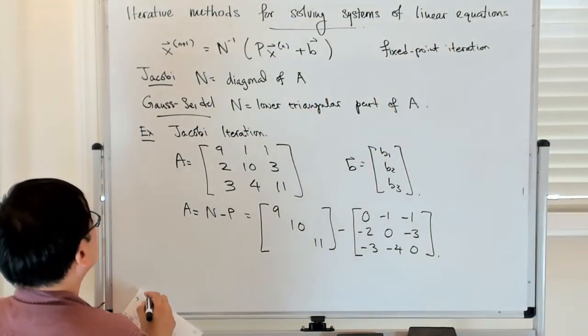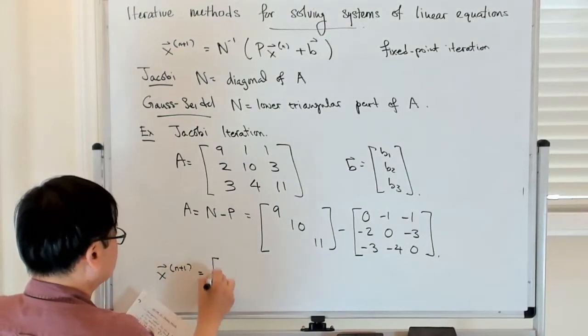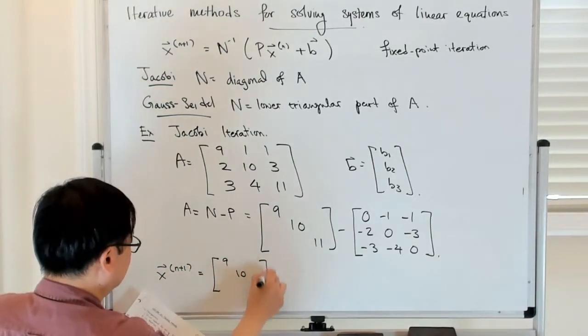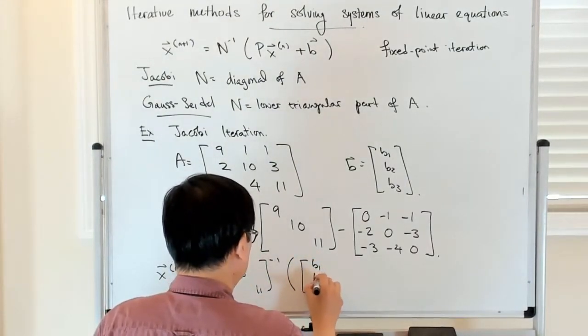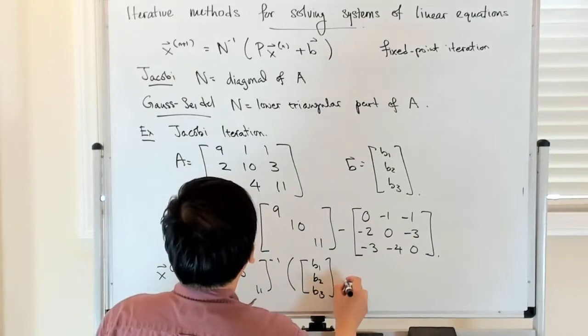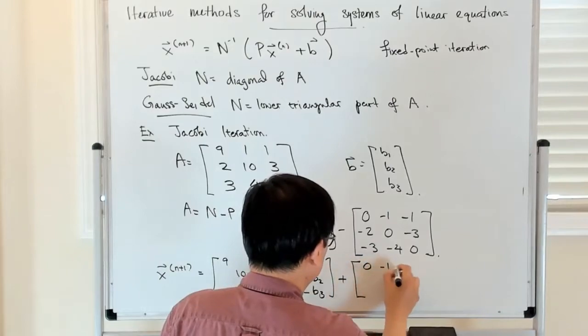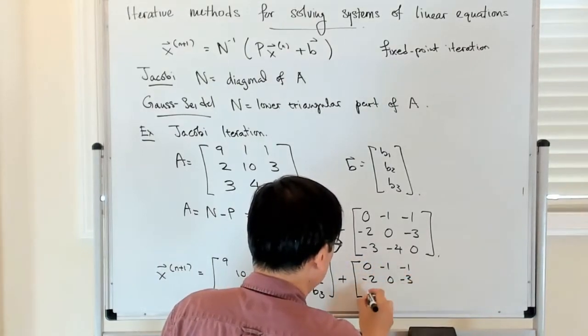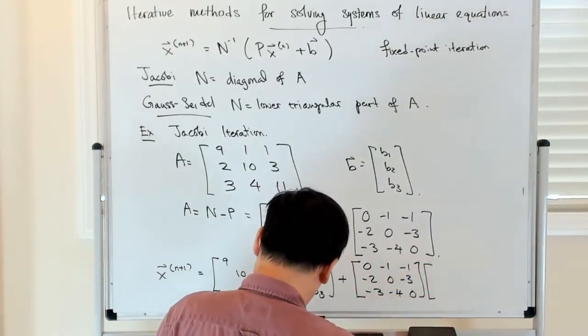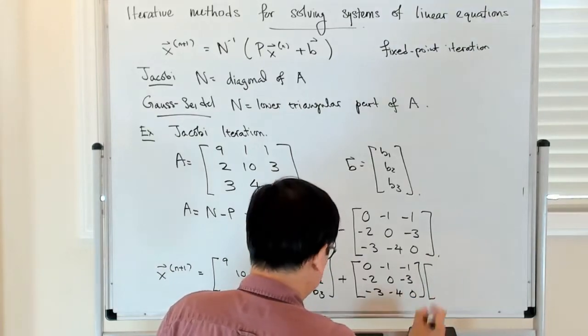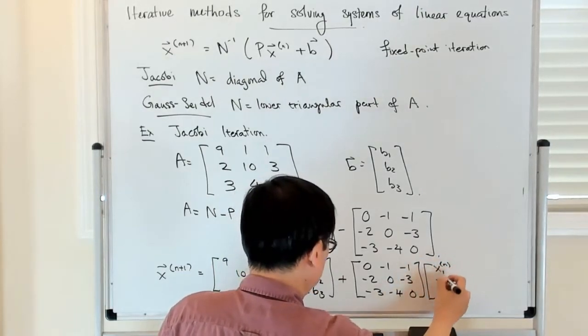And the iteration is X_{n+1} equals [[9, 0, 0], [0, 10, 0], [0, 0, 11]] inverse applied to [B1, B2, B3] plus P times [[0, -1, -1], [-2, 0, -3], [-3, -4, 0]] applied to [X1, X2, X3] at the nth stage.